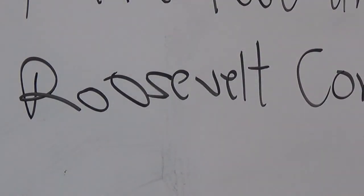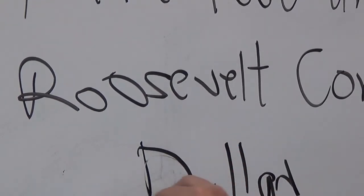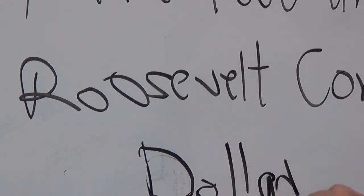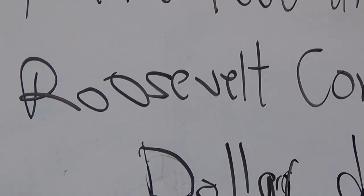Roosevelt used an approach called the big stick in dealing with Latin America. The next man after him, Taft, was to use dollar diplomacy — trying to get his way into Latin America using American money. Roosevelt used troops. But eventually, what this led to is Franklin Roosevelt tried to be a good neighbor. He practiced what was called the Good Neighbor Policy.